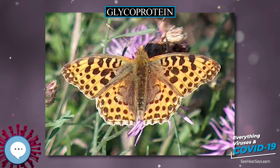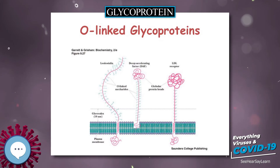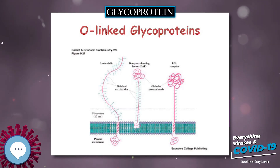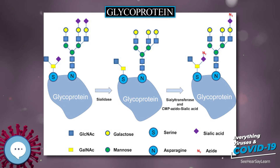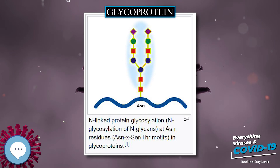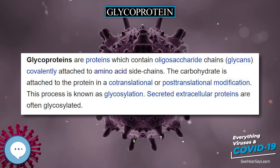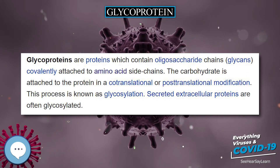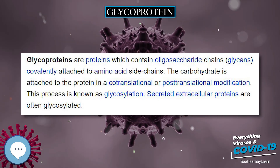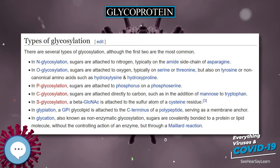It is important to distinguish endoplasmic reticulum-based glycosylation of the secretory system from reversible cytosolic and nuclear glycosylation. Glycoproteins of the cytosol and nucleus can be modified through the reversible addition of a single GlcNAc residue, considered reciprocal to phosphorylation. The functions of these are likely additional regulatory mechanisms that control phosphorylation-based signaling.